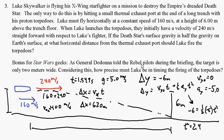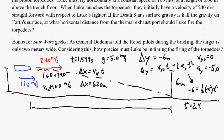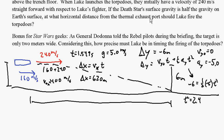Now, the bonus for Star Wars geeks: General Dodonna — that guy in robes with the beard in the briefing scene — says the target area is only 2 meters wide. So how big is the window of time during which Luke can fire his torpedoes and hit the thing? Imagine at one point he fires the torpedoes — they'll just hit the front of this thing. Then his spaceship moves 2 meters, and if he fires just then, after it moves 2 meters, they'll hit the back of it. So really you just have to find how much time it takes for the X-wing to go 2 meters.